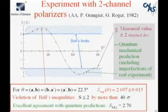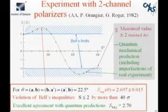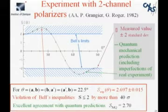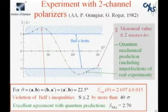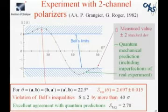Look at the result. The green curve is the prediction of quantum mechanics, calculated before we did the experiment — it takes into account the small inefficiency of the experiment. The red blocks are the result of the experiment, and it goes beautifully on the curve. You can see the zones of maximum violation of Bell's inequality — a violation by more than 40 standard deviations. There is absolutely no doubt.